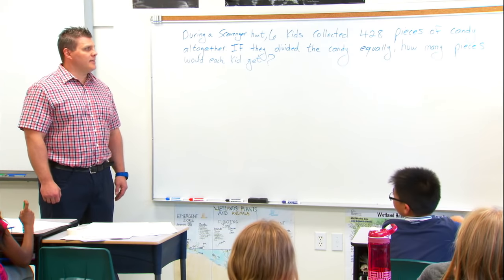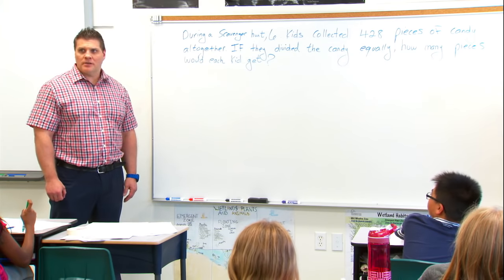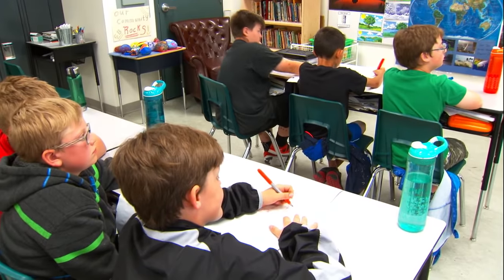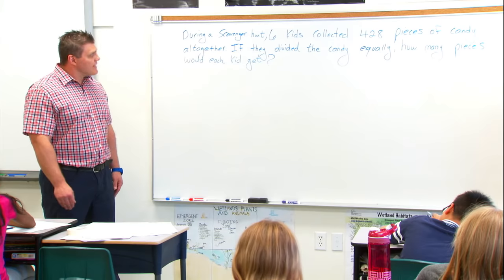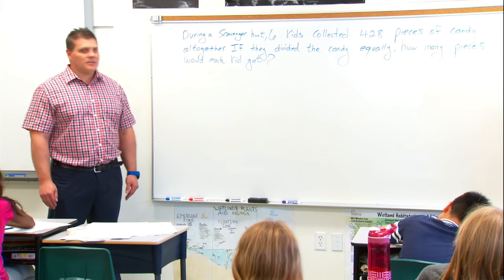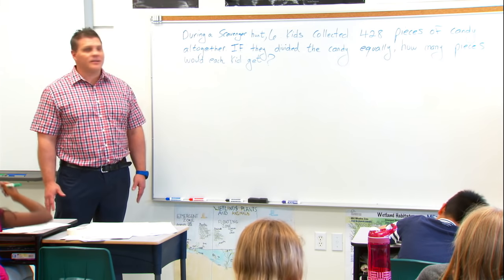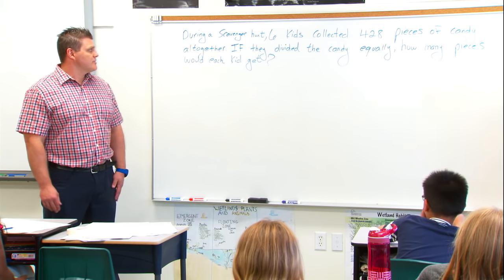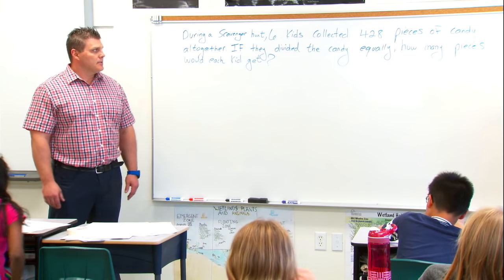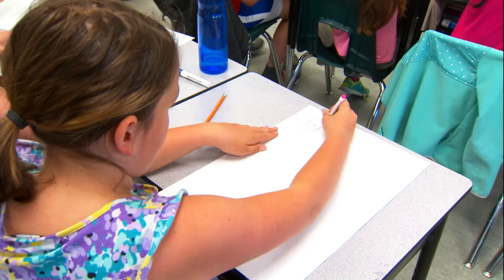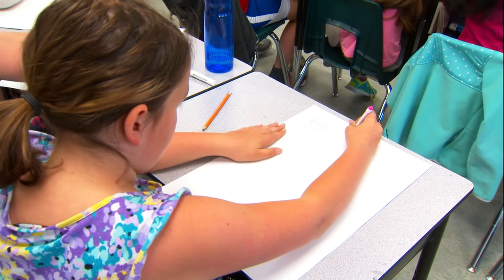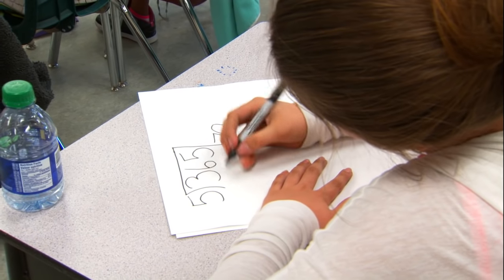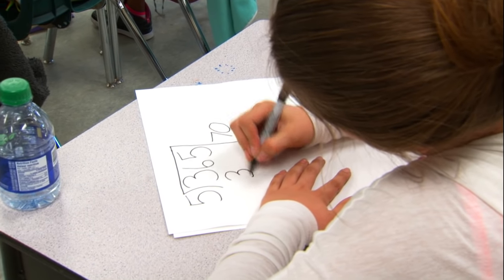Today we're going to be continuing division by subtraction, only this time we're going to be looking at solving problems that have remainders. The problem is: during a scavenger hunt, six kids collected 428 pieces of candy altogether. If they divided the candy equally, how many pieces would each kid get? Division problems that involve remainders can be solved using the same method — subtracting multiples of the divisor until the result is less than the divisor. This number becomes the remainder.